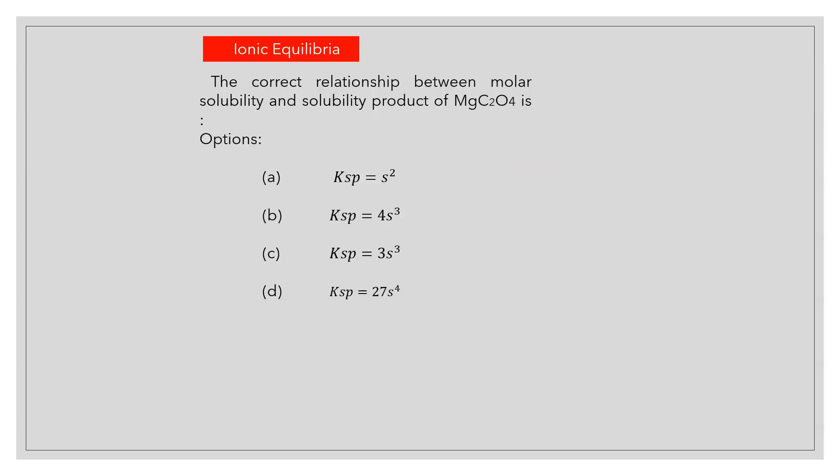The correct relationship between molar solubility and solubility product of MgC2O4 is? Answer A: Ksp is equal to S squared.